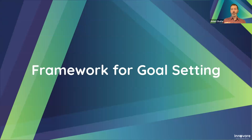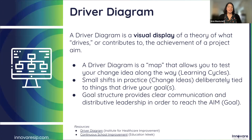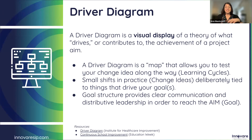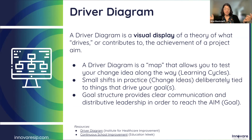Now we're going to go over one more framework for goal setting — a broader, more systemic tool for big opportunities and big improvement ideas. A driver diagram is a visual — I like to call it a flow chart. It's a visual display of a theory of what is driving or contributing to the achievement of your aim. Think of it as a map. What's nice about maps is you can put them up as visual aids for your teams, do it virtually or in person, allowing you to all co-plan in a systemic way.